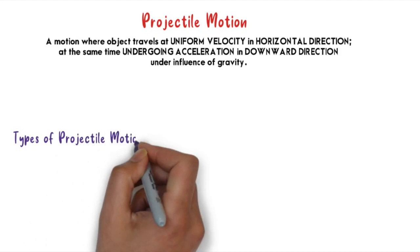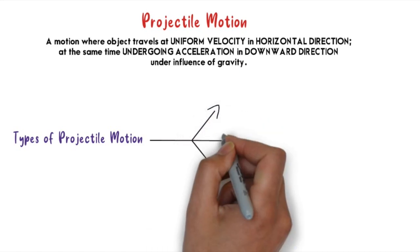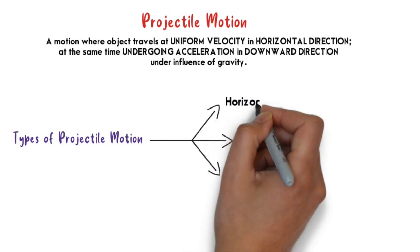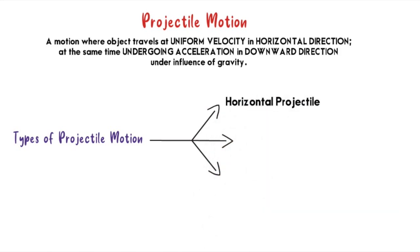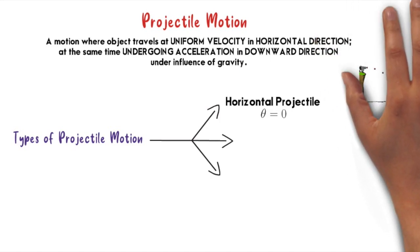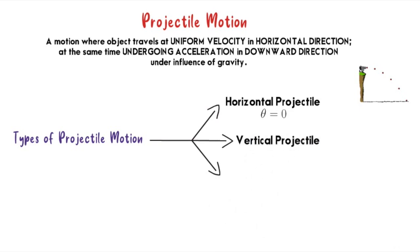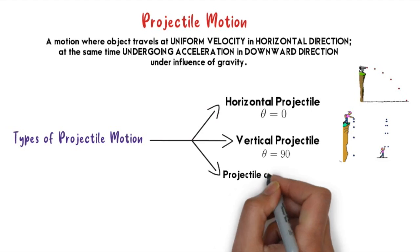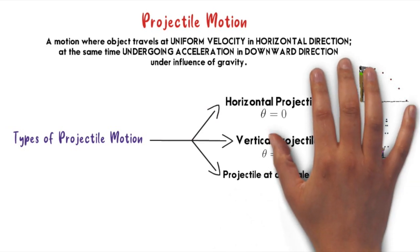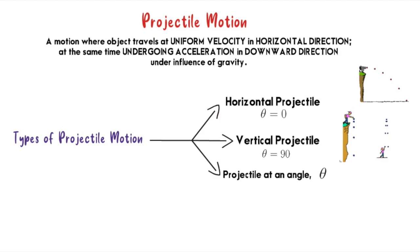There are three types of projectile motion. The first is horizontal projectile, when theta equals zero degrees — for example, a cannonball leaving a cliff with a horizontal velocity of 2 meters per second. The second is vertical projectile, when theta equals 90 degrees — for example, throwing an object straight upward. The third is projectile at an angle theta, when theta is between zero and 90 degrees.